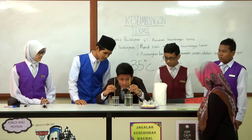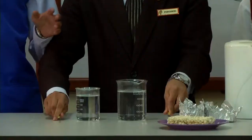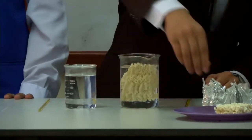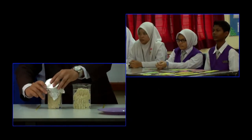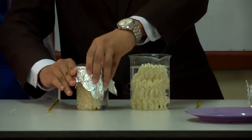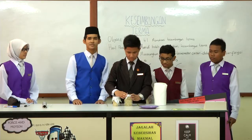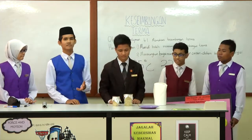Berapakah suhu awal air tersebut? Suhu awalnya adalah 75 darjah Celsius. Hazim akan meletakkan mee ke dalam setiap bekas bikar ini, kemudian menutup kedua-dua bikar ini menggunakan aluminium foil dan menunggunya sehingga ia mengembang. Sementara menunggu, kami akan mempersilakan Tarju dan Amir untuk menjelaskan tentang perbezaan dan persamaan suhu dan haba.